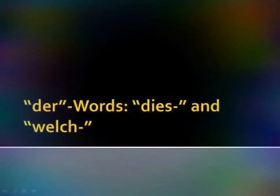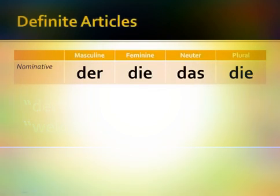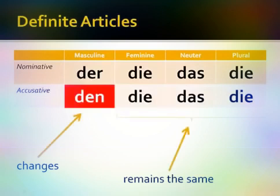Let's take a look at definite articles. In German the definite articles are der, die, das, and die in the nominative case. In the accusative case, the definite articles are den, die, das, die. We choose the appropriate definite article based on whether the noun it modifies is masculine, feminine, neuter, or plural, and whether this noun is in a nominative or accusative environment.